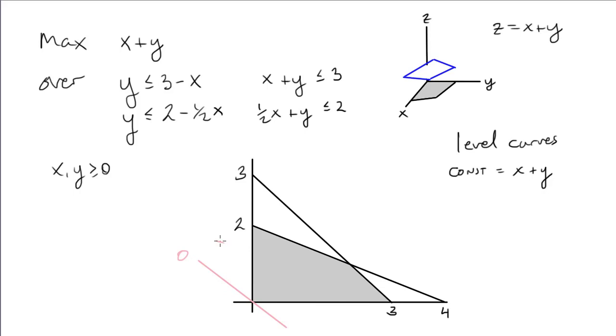And we just start advancing the value of Z until there's no intersection with the constraint set. Three is our maximum value over that region of the constraint set.